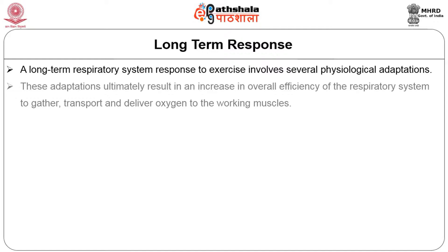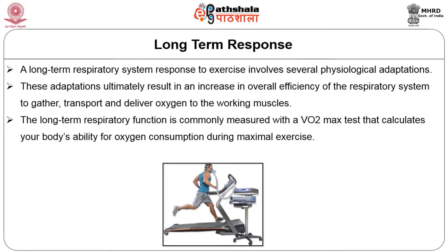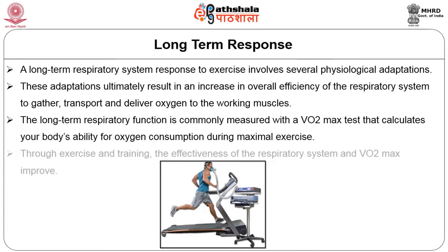VO2 max is another term we need to understand when talking about the respiratory system and exercise. It calculates the body's ability for oxygen consumption during maximal exercise and tends to improve as we exercise continuously. VO2 max is our body's ability to maximize on available oxygen, which depends on the ability of the lungs to take in oxygen, the ability of blood supply to reach working muscles, gaseous exchange, and the release of carbon dioxide to prevent muscle fatigue. Regular exercise improves our VO2 max.